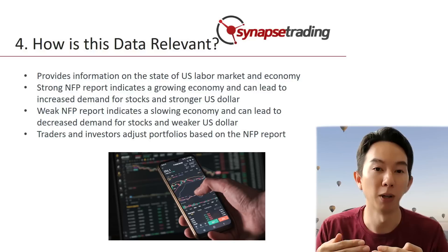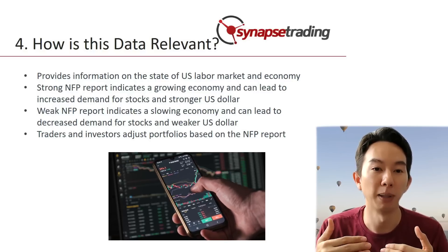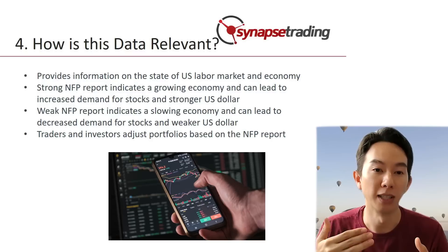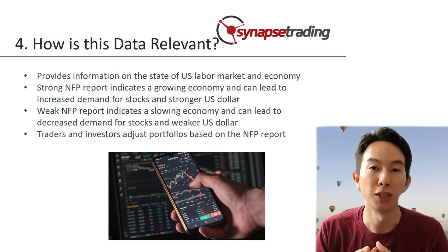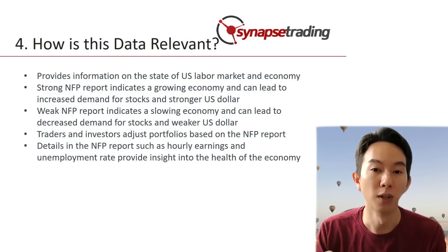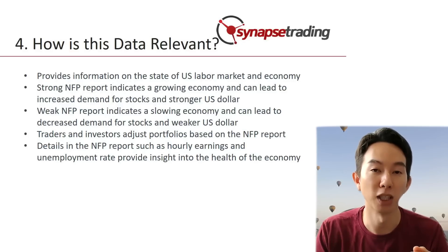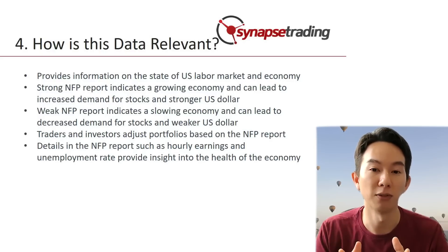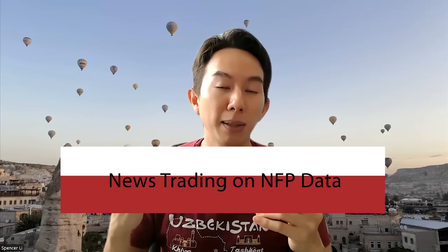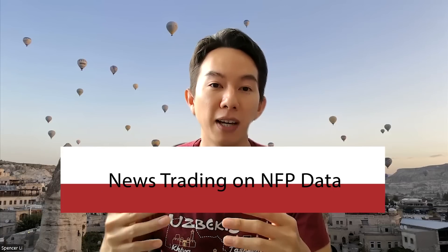For example, if the NFP report shows strong job growth, traders and investors may increase their investment in stocks, while if it shows weak job growth, then they will decrease their stock investment and instead shift to safer assets such as bonds. In addition to the overall level of job growth, traders and investors also pay attention to other details of the NFP report such as average hourly earnings and the unemployment rate, because these data points can provide further insight into the health of the US economy and the direction of future monetary policy, which will in turn impact the financial markets. Let's do a deep dive on how these individual factors can affect the market.